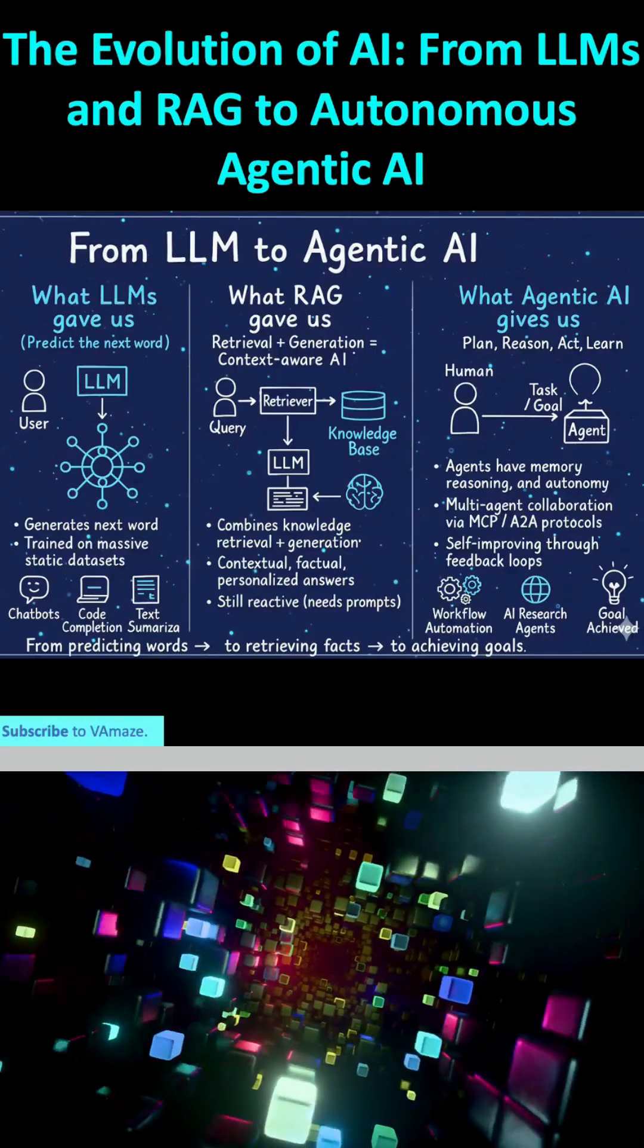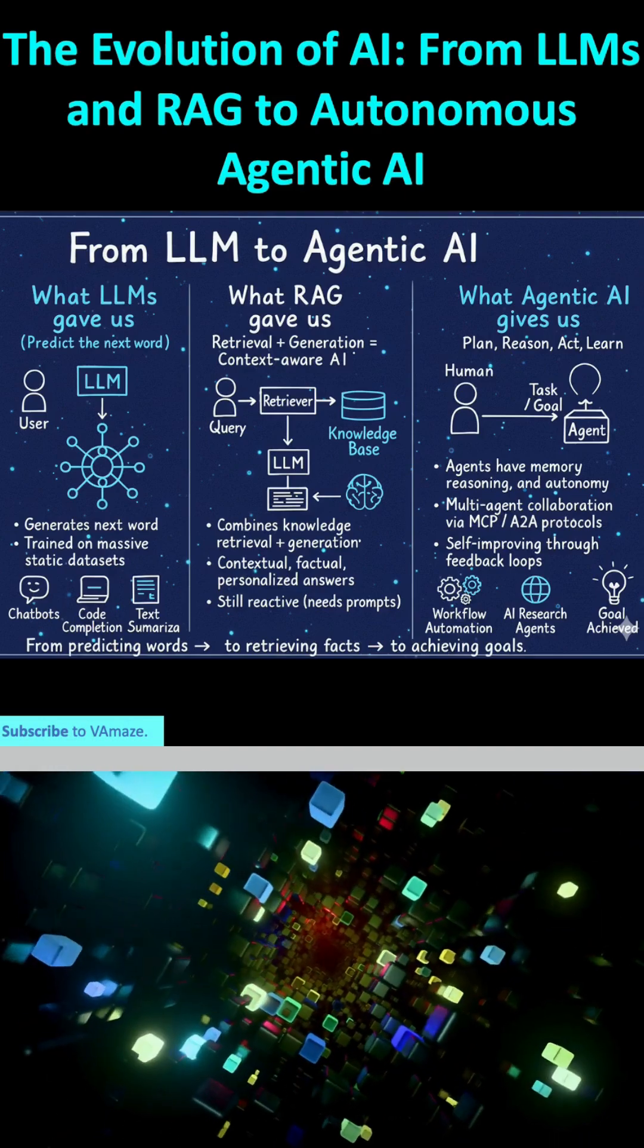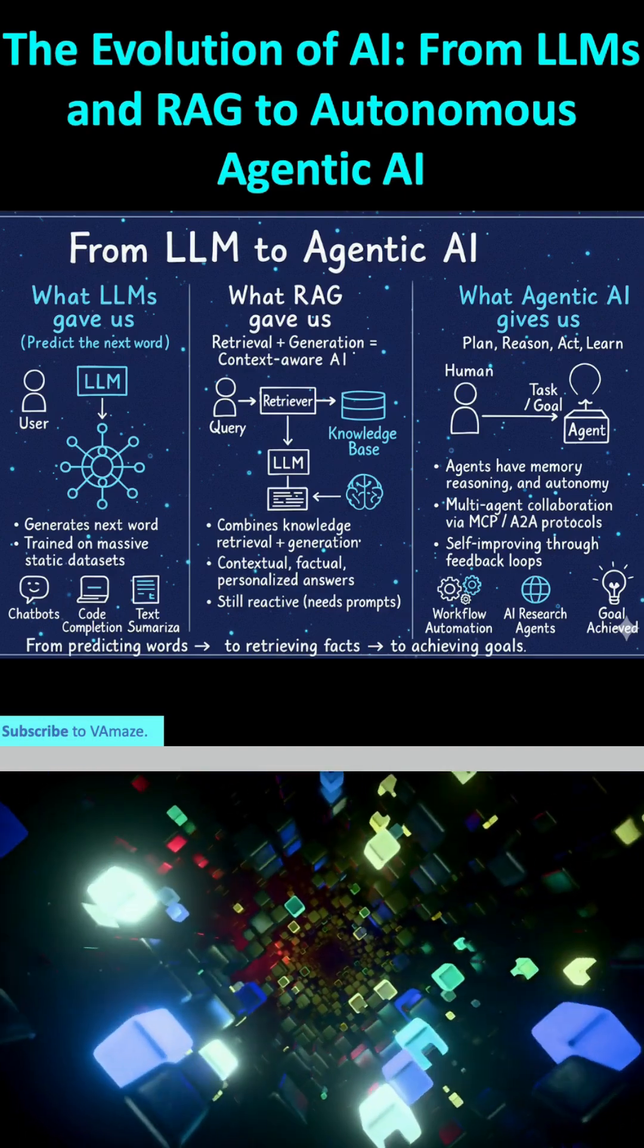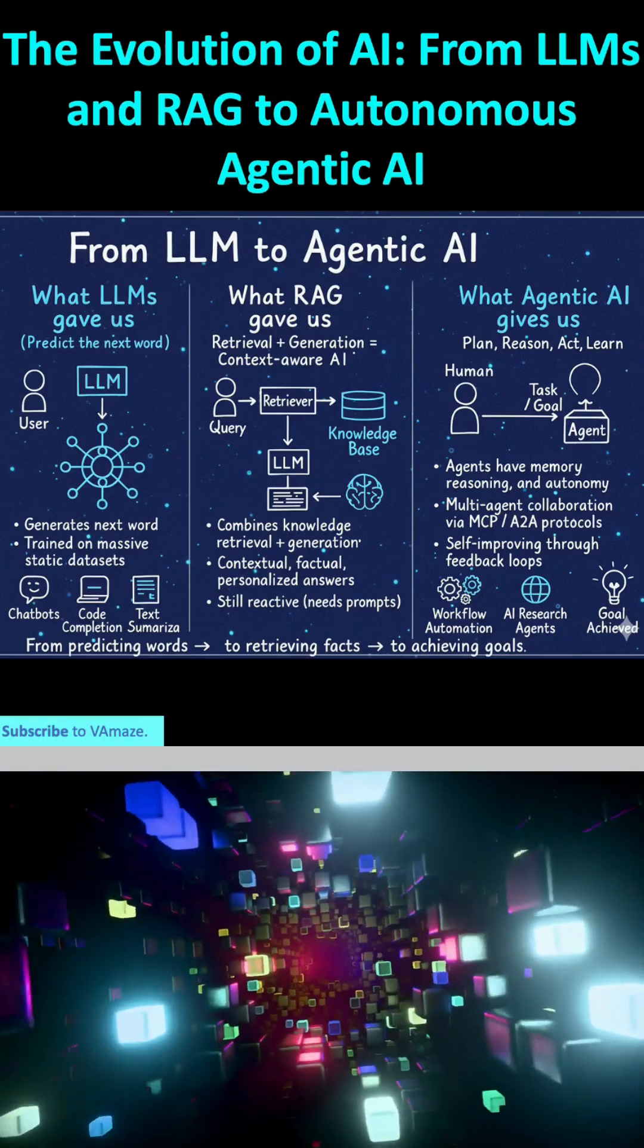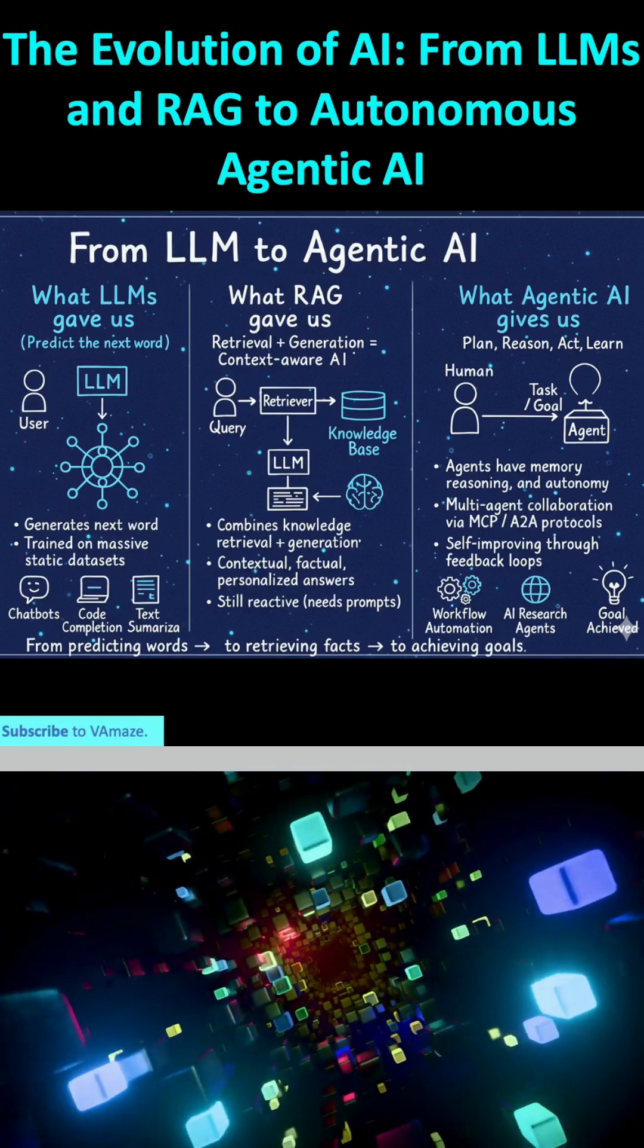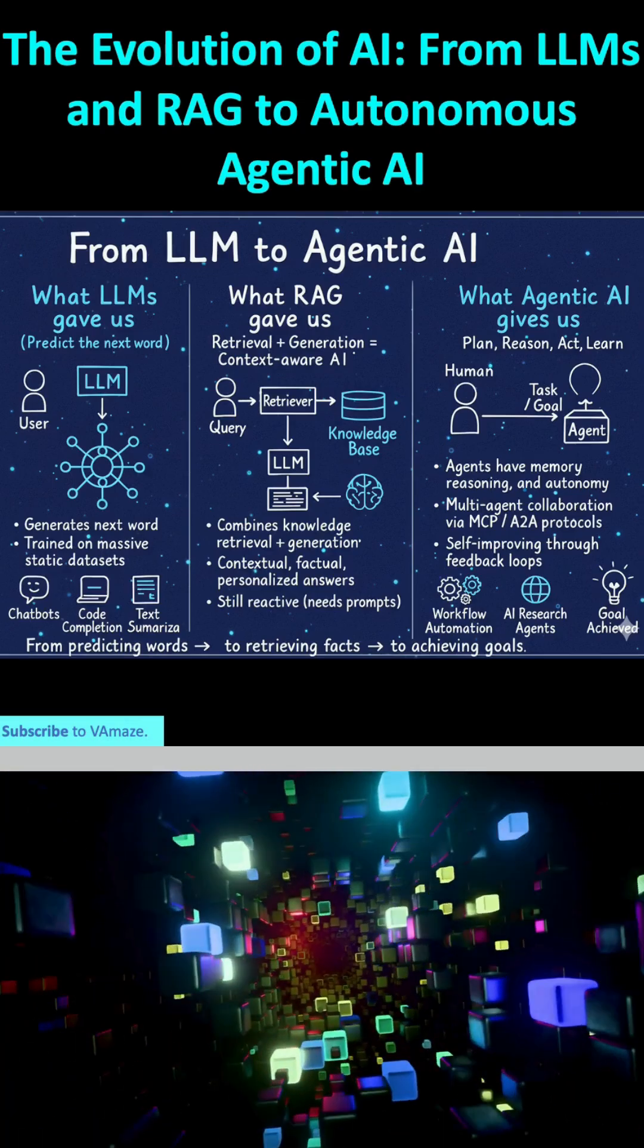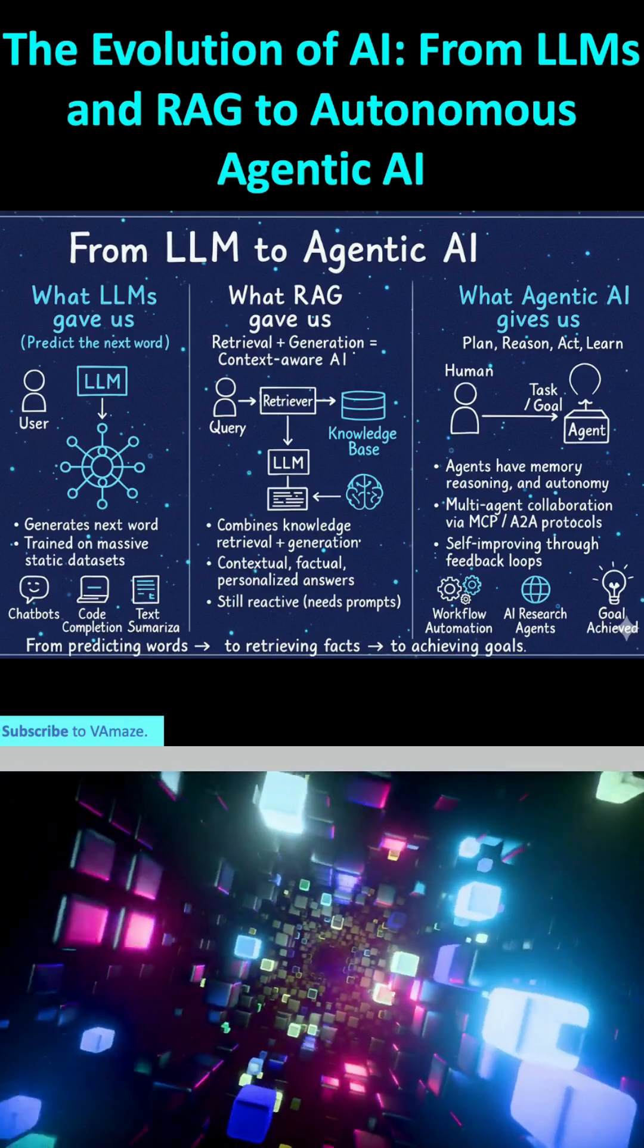We're witnessing a rapid evolution in artificial intelligence, moving far beyond simply predicting words to achieving complex goals. This image breaks down that journey into three key stages: what large language models gave us, what retrieval augmented generation or RAG added, and where agentic AI is taking us.